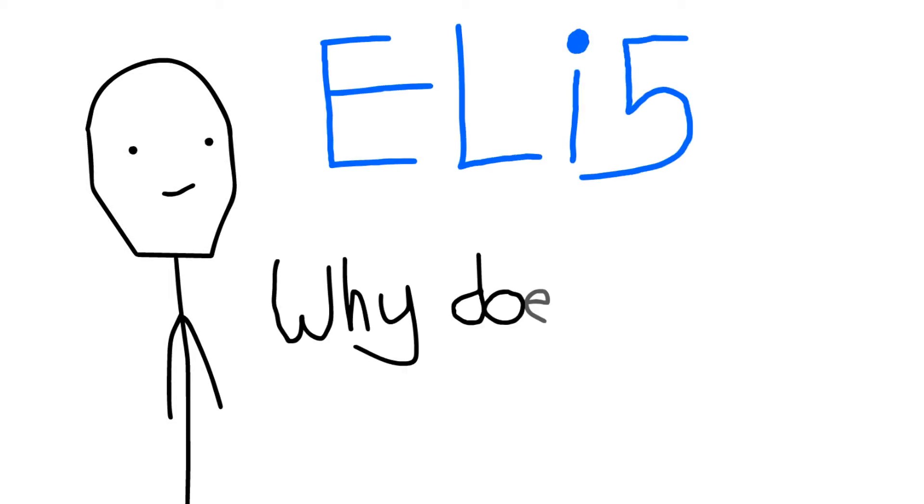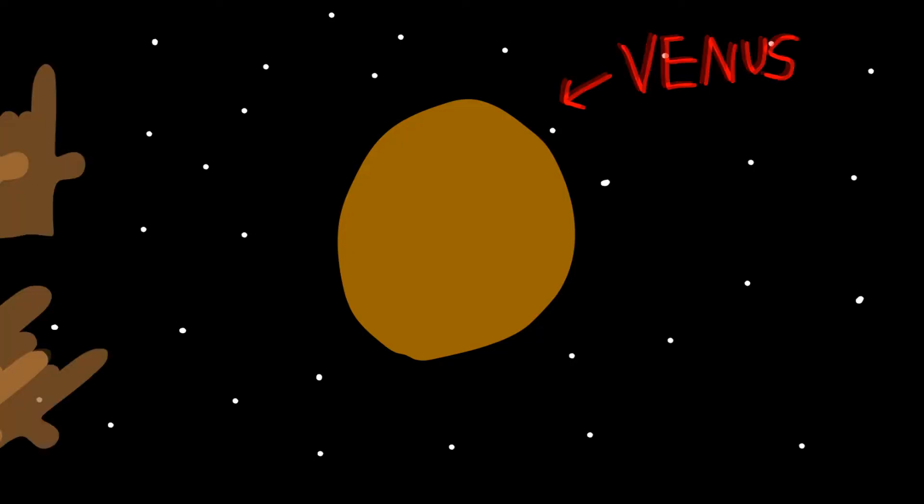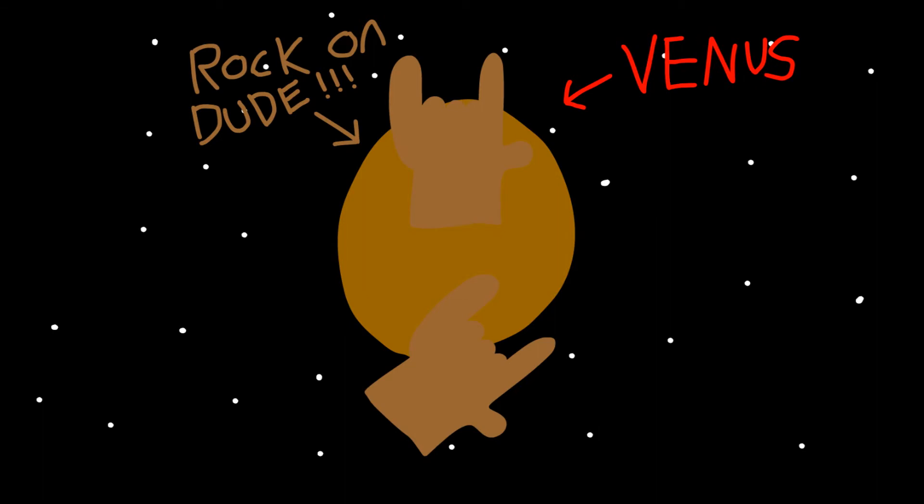Explain like I'm five, why does it snow metal on Venus? So it snows metal on Venus, and no, I'm not talking about the rock-on-dude type of metal, I'm talking about metal.